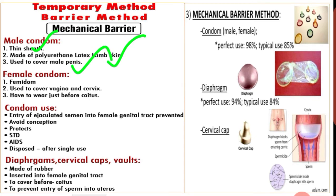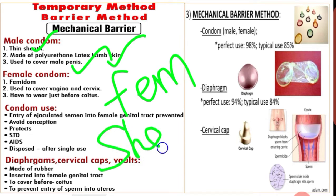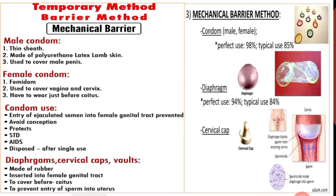Next is female condom, otherwise known as femme shield or femidom. The female condom is a polyurethane pouch with a ring at either side. It is used to cover the vagina and cervix and is worn just before sexual activity.